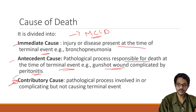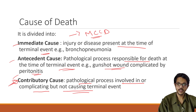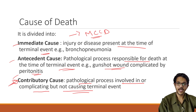Next is contributive cause. The contributive cause is not directly related to death, but is a pathological process involved in or complicating — but not directly causing — the terminal event. It contributes to the cause of death but is not the cause itself. For example, if a person is anemic and has some injury like an accident and bleeds, a normal person may tolerate that blood loss, but an anemic person may die even from losing just a few litres of blood. That is the contributive cause of death.